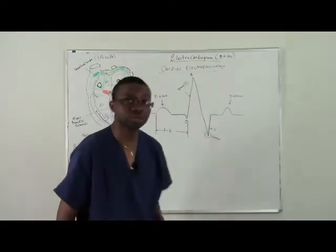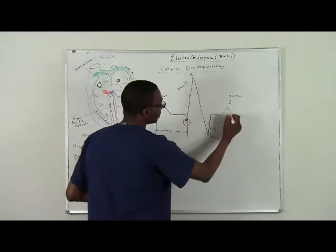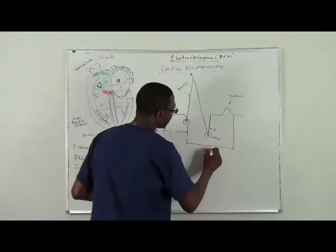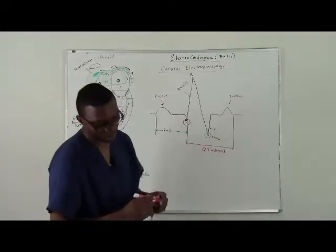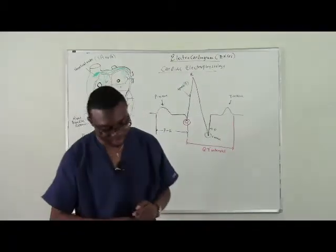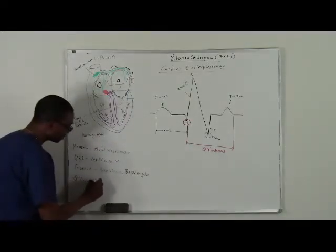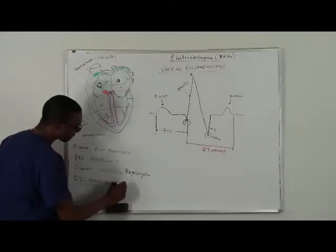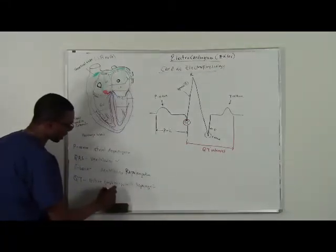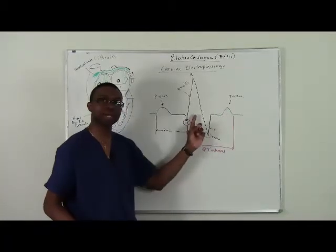Now, there's another interval known as the QT interval. The QT interval, which is the beginning of the Q to the end of the T wave. The beginning of the Q to the end of the T wave. That is known as the QT interval. Well, the QT interval represents the entire period of depolarization and repolarization of the ventricles. That's the entire depolarization plus repolarization of the ventricles. As you can see here on the board. See, that's the ventricles. It depolarizes and then repolarizes. Depolarizes and repolarizes.